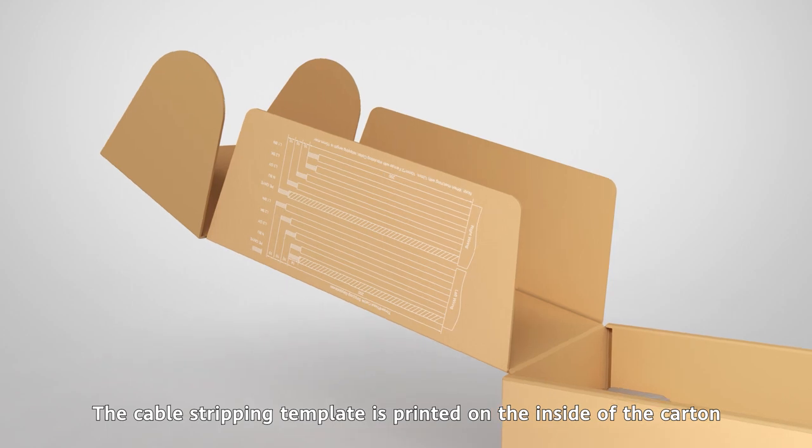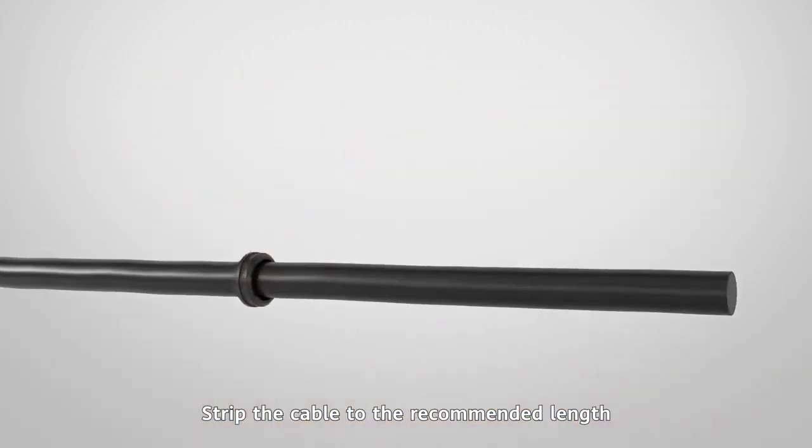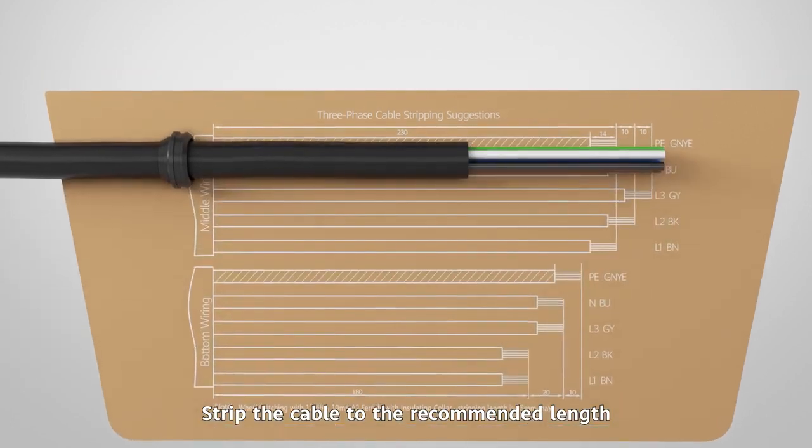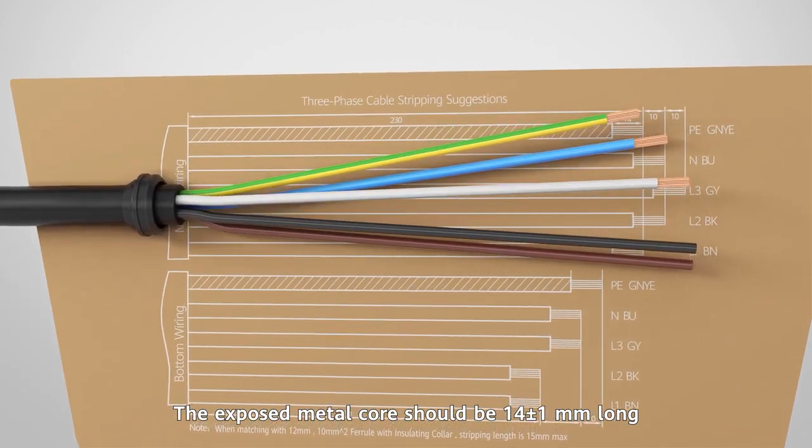The cable stripping template is printed on the inside of the carton. Strip the cable to the recommended length. The exposed metal cord should be 14 plus minus 1 millimeters long.